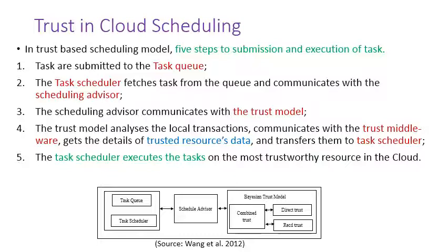In the trust based scheduling model, there are five steps to submission and execution of tasks. First, the tasks are submitted to a task queue and the task scheduler fetches the task from the queue and communicates with the scheduling advisor. The scheduling advisor communicates with the trust model. The trust model analyzes the local transactions and communicates with the trust middleware. It then gets the details of trusted resource data and transfers them to the task scheduler, which executes the task on the most trustworthy resources in the cloud.